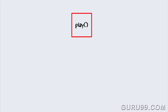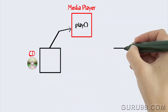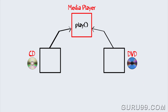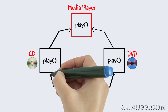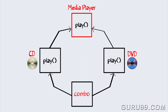Consider the following scenario: the class Media Player has two subclasses, CD Player and DVD Player, each having its own implementation of the play method. Another class, Combo Drive, is inheriting both CD and DVD.